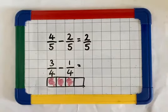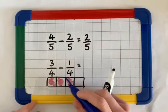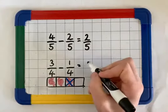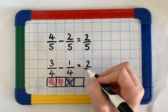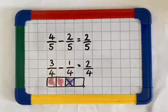Now I'm taking away 1 quarter. So I want to cross out 1 quarter. So that makes 2 quarters. I have 2 quarters remaining.